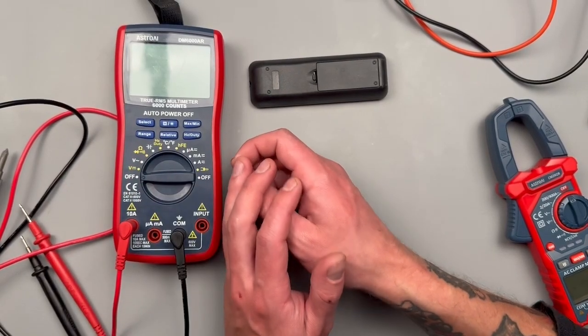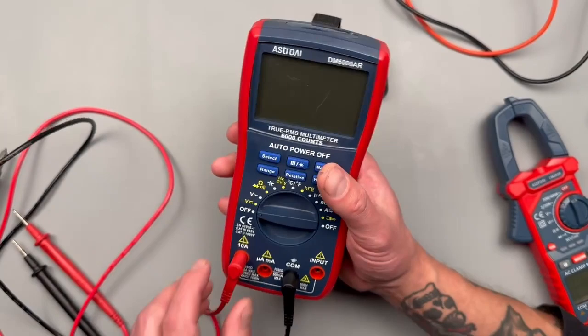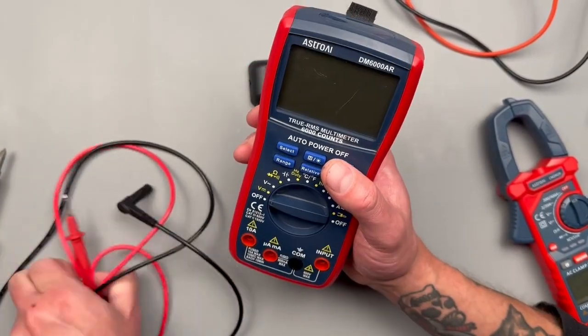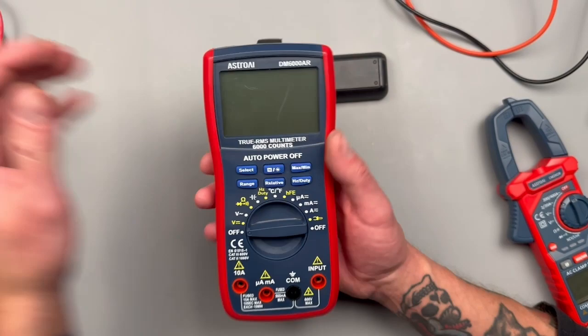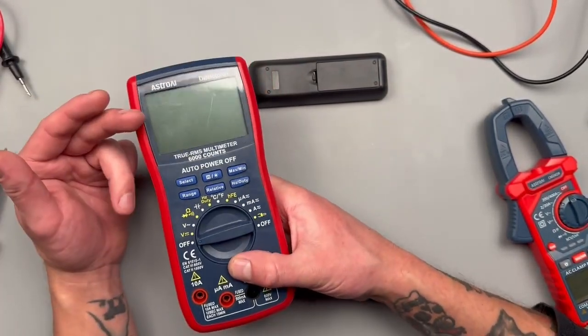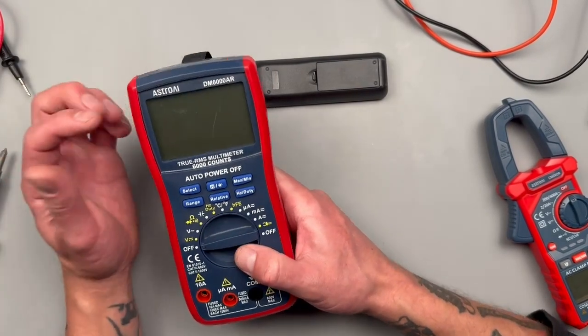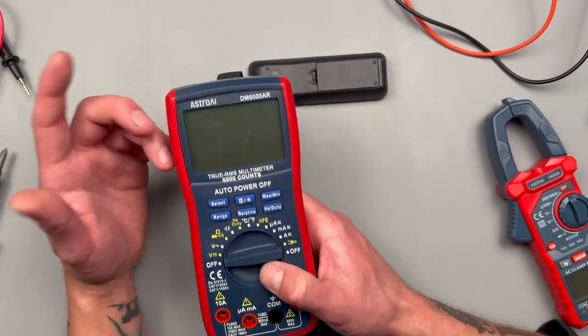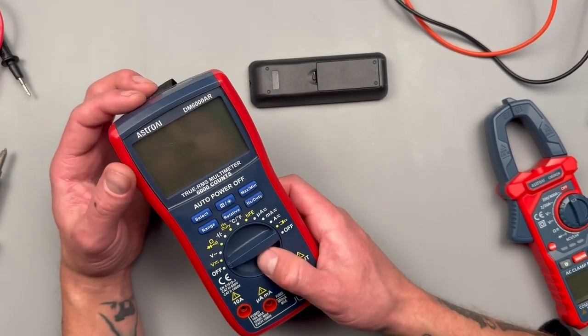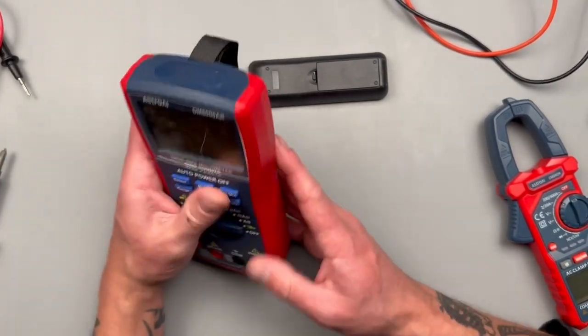There you go. I hope that was helpful: Astro AI DM6000 AR. If you all have any questions or if any of you have any issues with this meter, let us know down in the comments so that other people can know whether or not this is a reliable meter or if it has a tendency to be defective. In my experience, the Astro AI stuff has been pretty reliable. I think they're great meters in my opinion—a lot of versatility, a lot of bang for your buck. Not endorsed by them in any way. There you go, I hope that helps.